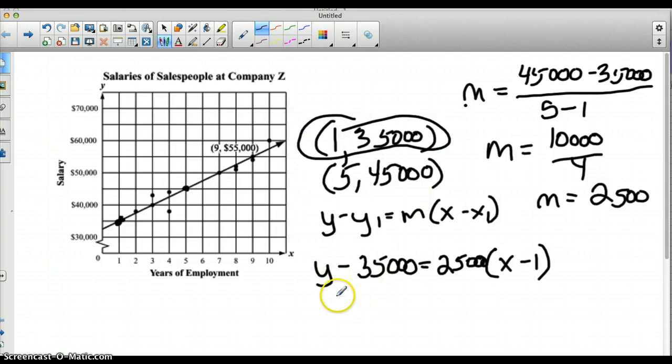So distribute and simplify. So we have y minus 35,000 equals 2,500x minus 2,500. Add 35,000 to both sides.